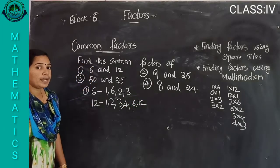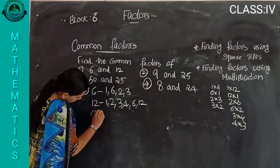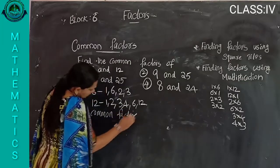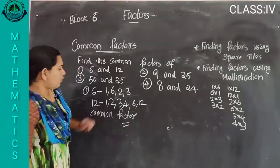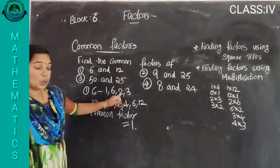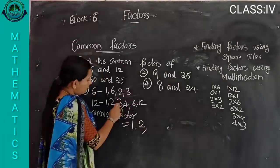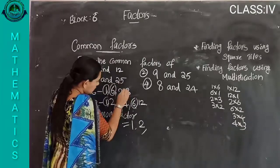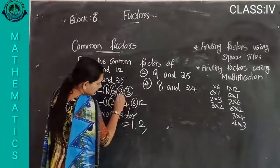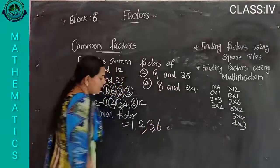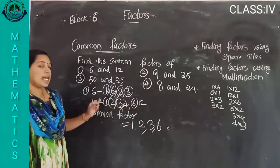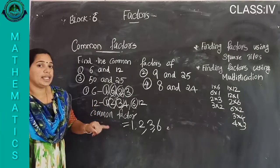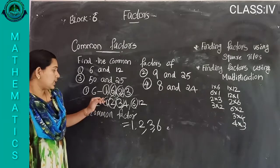After that, what do we want to find? Yes, the common factor. Which are the common numbers? One, two, three, six. So one, two, three, six are the common factors of six and twelve.